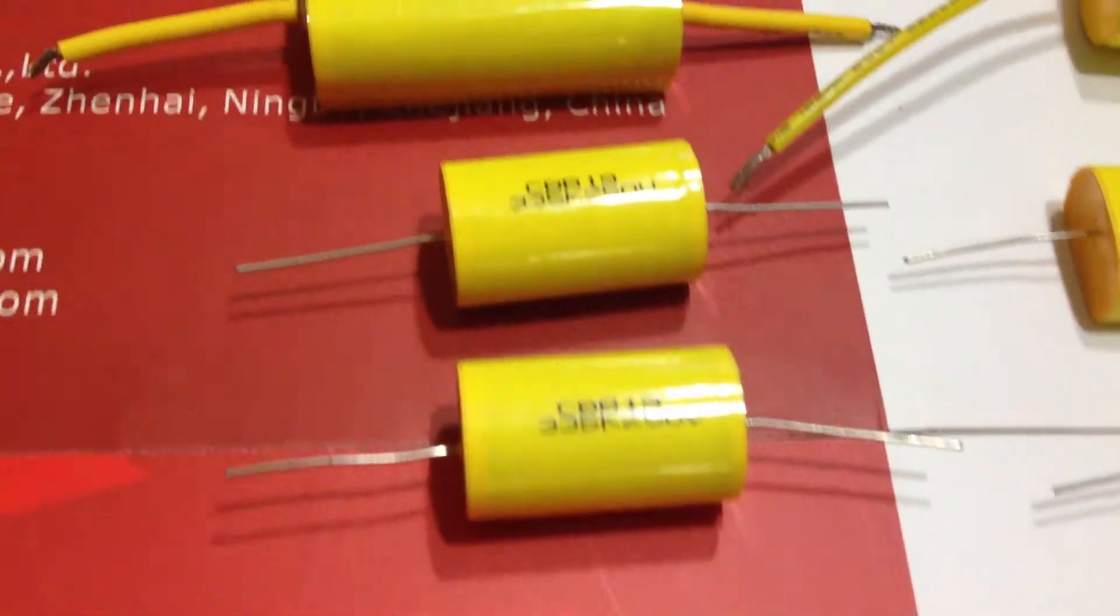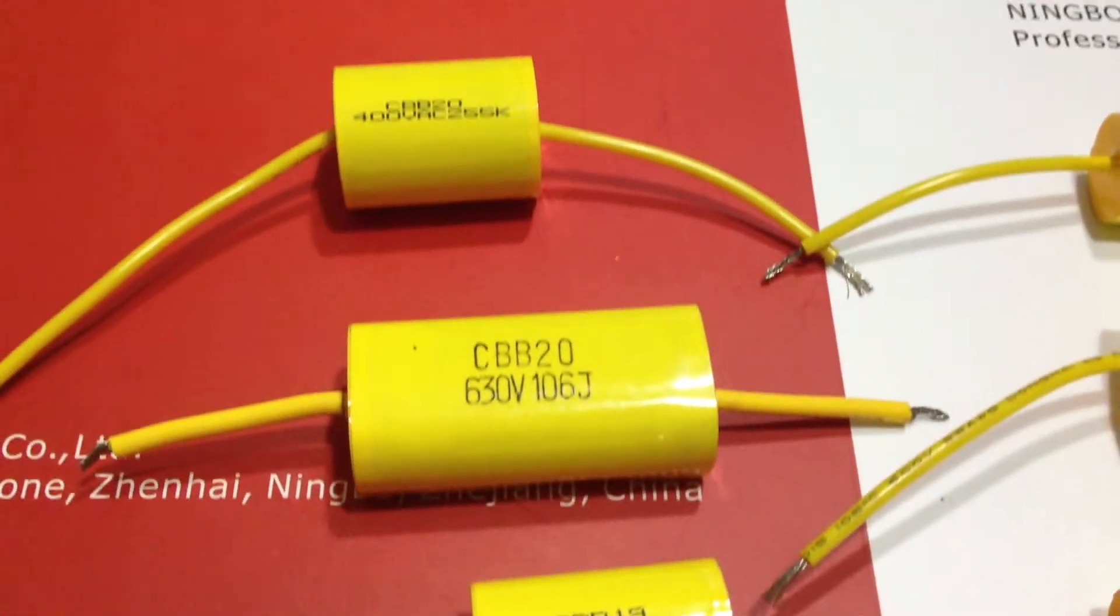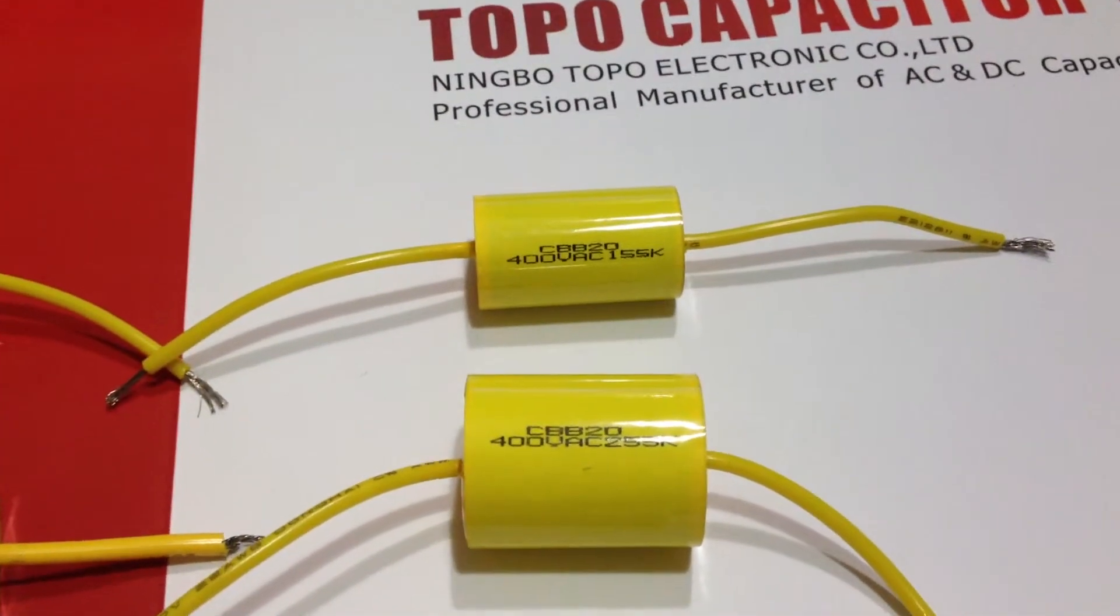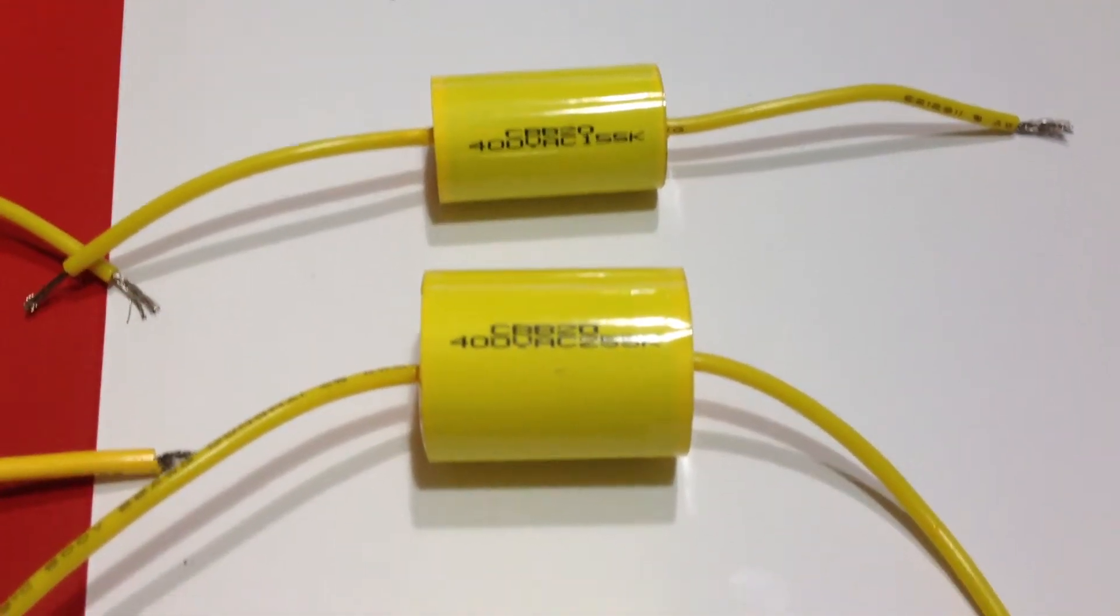Capacitance ranges from 0.0022 microfarads to 4.7 microfarads, with rated voltage at 275 volts, 280 volts, and 300 volts.